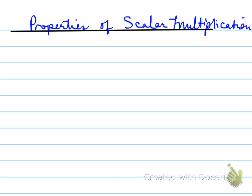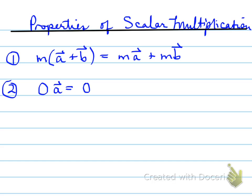Properties of scalar multiplication. Let's look at the different properties. M times vector a plus vector b equals ma plus mb. Zero times a vector equals the zero vector. One times vector a equals vector a.